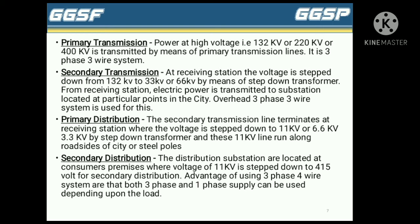It should be noted that these primary transmission lines are overhead tower lines. The next part is secondary transmission. At the receiving station, the voltage is stepped down from 132 kV to 33 kV or 66 kV by means of a step-down transformer. From the receiving station, electric power is transmitted to substations located at particular points in cities. An overhead three-phase three-wire system is used for this.